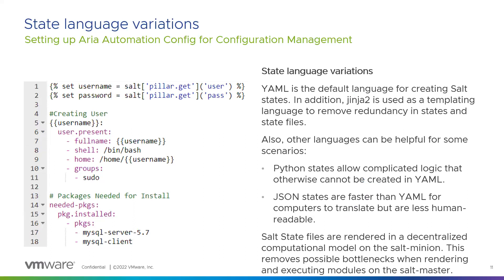YAML is the default language for state files, but they can also be created in Python and JSON. State files are rendered on the salt minion in a decentralized model to remove bottlenecks from the salt master — each minion processes the state file itself. We can leverage Jinja to create a variable to hold the value of pillar username and password values, referenced in the state file.